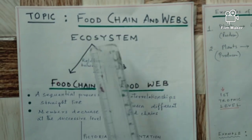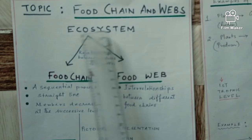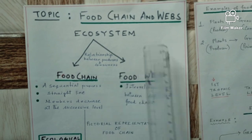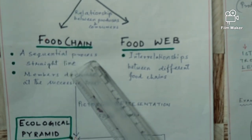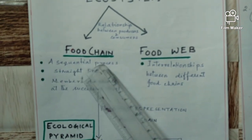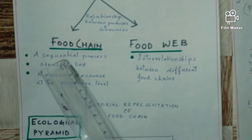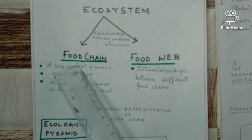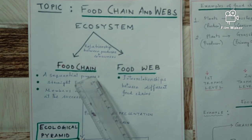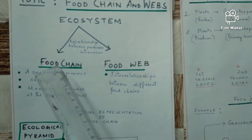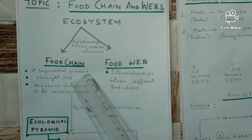In an ecosystem this is a relationship between producers and consumers, and this food chain and food wave depicts that relationship. The first characteristic of food chain is that it is a sequential process. Because in a food chain, the first level is the producer, then it goes to the second level — primary consumer — then secondary consumer, then tertiary consumer. So the process starts from the producer and ends with the top consumer level.